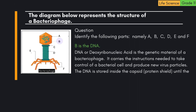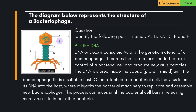B is the DNA. DNA, or deoxyribonucleic acid, is the genetic material of a bacteriophage. It carries the instructions needed to take control of a bacterial cell and produce new virus particles. The DNA is stored inside the capsid, or protein shield, until the bacteriophage finds a suitable host. Once attached to a bacterial cell, the virus injects its DNA into the host, where it hijacks the bacterial machinery to replicate and assemble new bacteriophages. This process continues until the bacterial cell bursts, releasing more viruses to infect other bacteria.